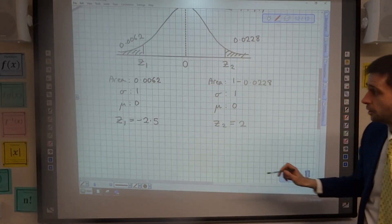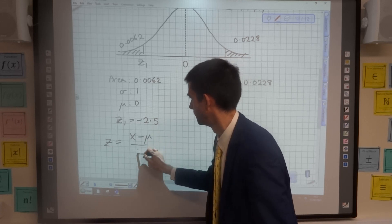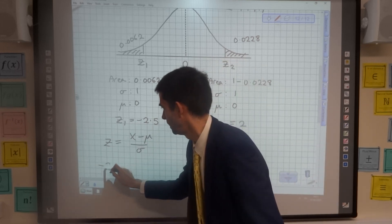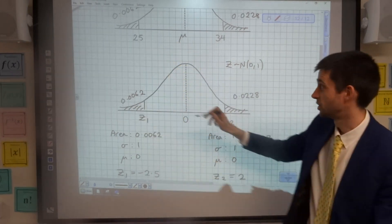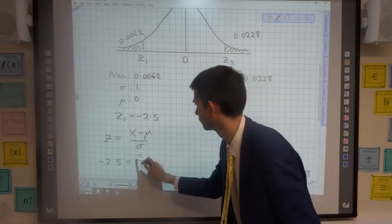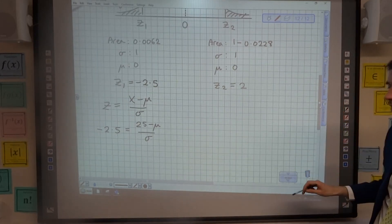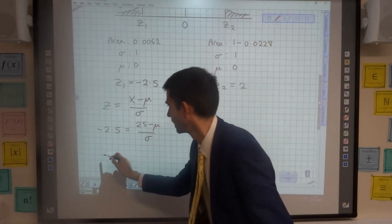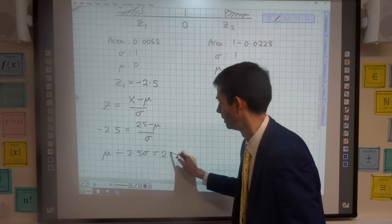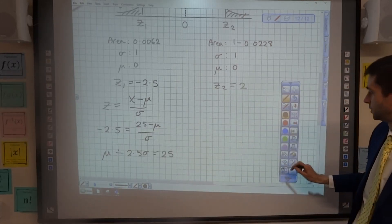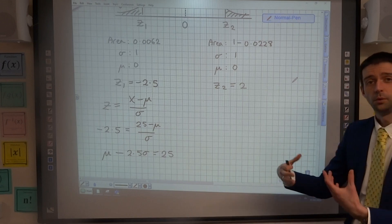Going to our standardizing formula: z equals x minus mean over standard deviation. My z value here is negative 2.5. The x value that came from is from my first distribution, so that's 25 minus the mean that I don't know, over standard deviation that I don't know. I'm just going to do a quick rearrange on that, and it will get me that mu minus 2.5 sigma is equal to 25. So that's one equation with mu and sigma.